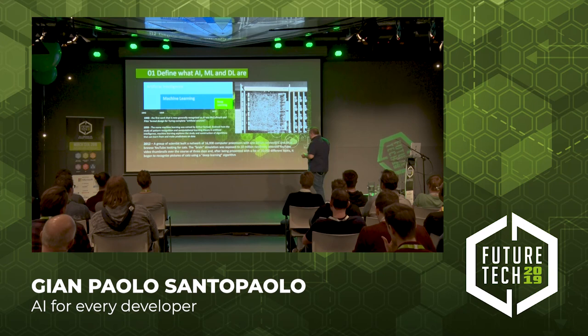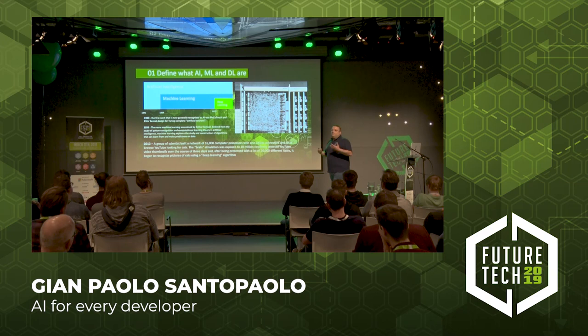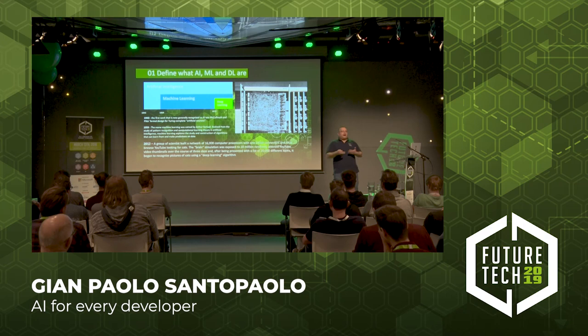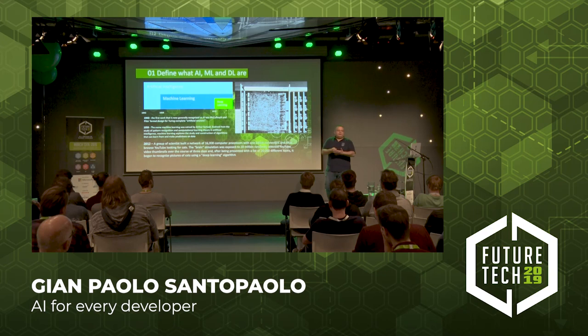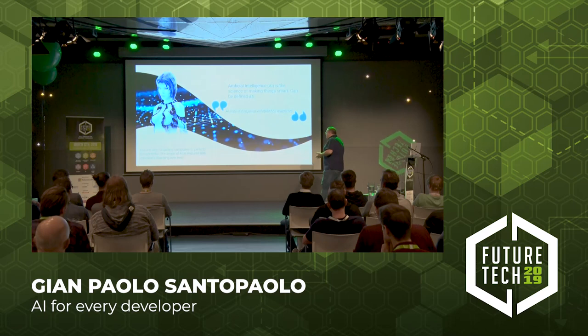To me, an important date is 2012. In 2012, it was the first time a group of scientists was able to bring the theory to practice. Making a network of 160,000 computer processors, they were able, for the first time in the world, to make a system able to recognize images. Imagine how hard it is if you have to write straightforward code to recognize what is in a picture — it's nearly not possible. For doing that, you need artificial intelligence and a lot of computational power.